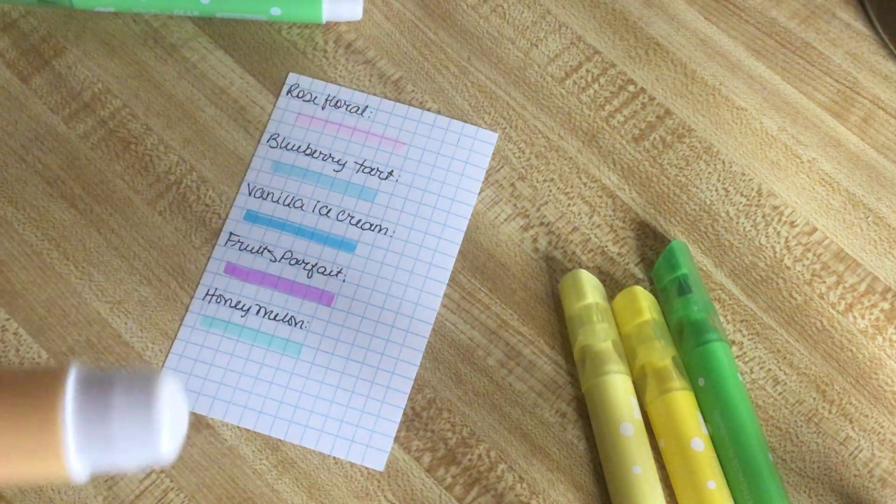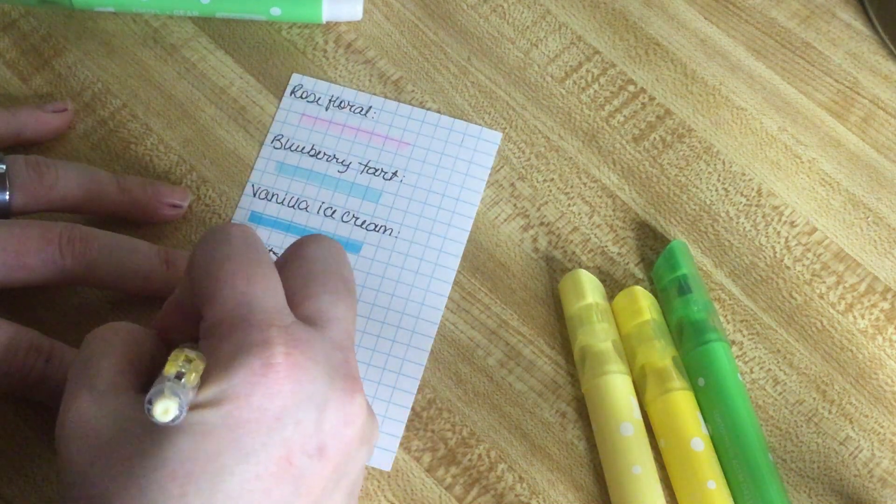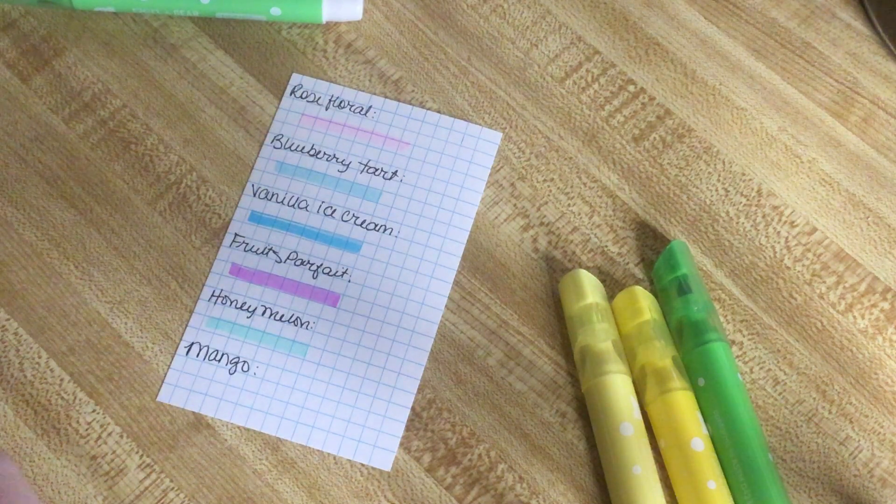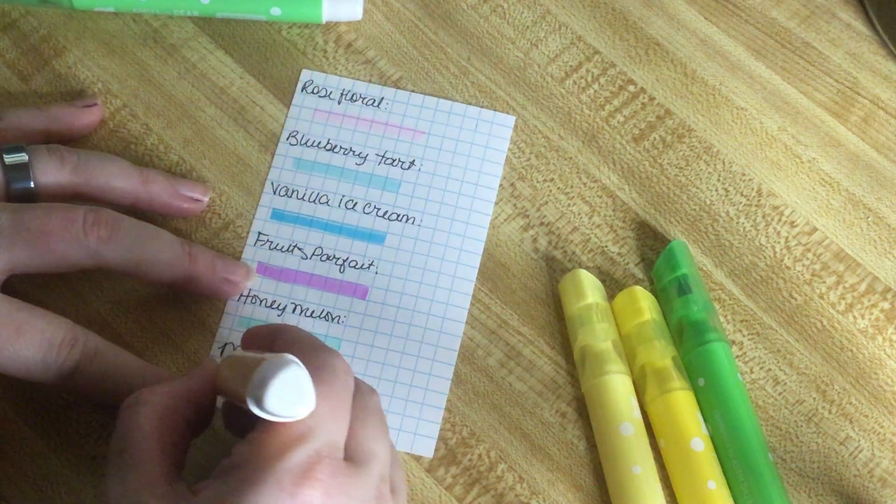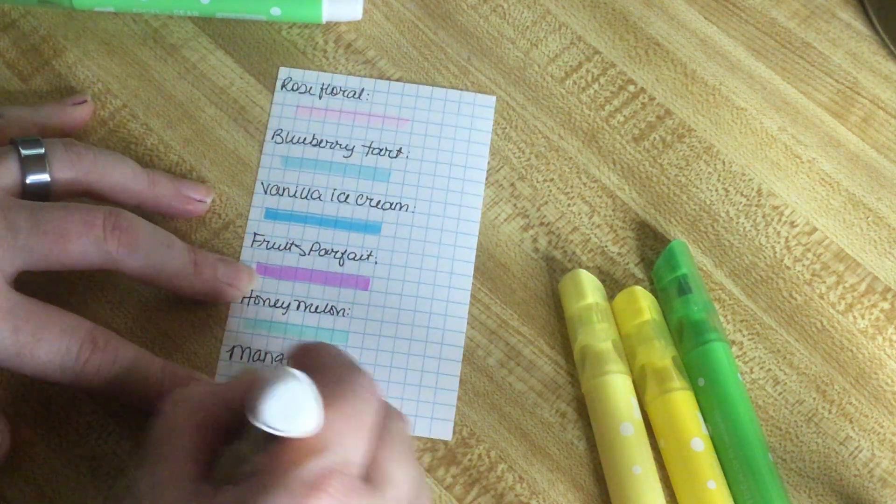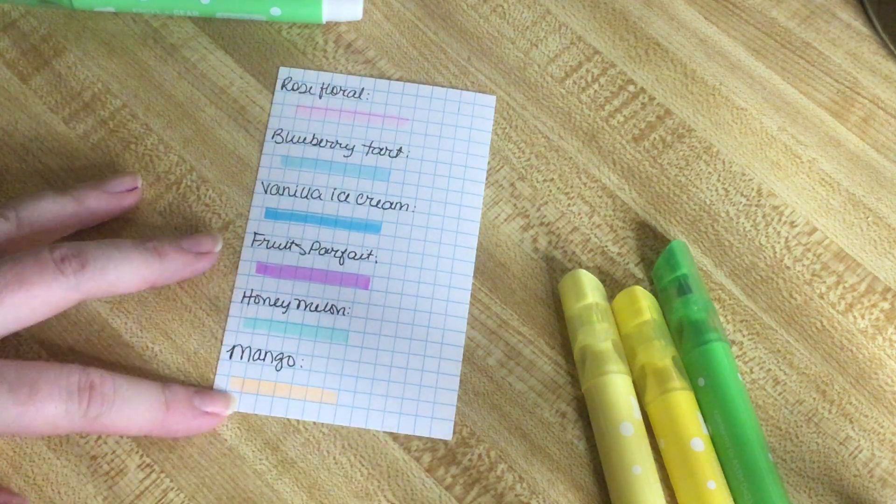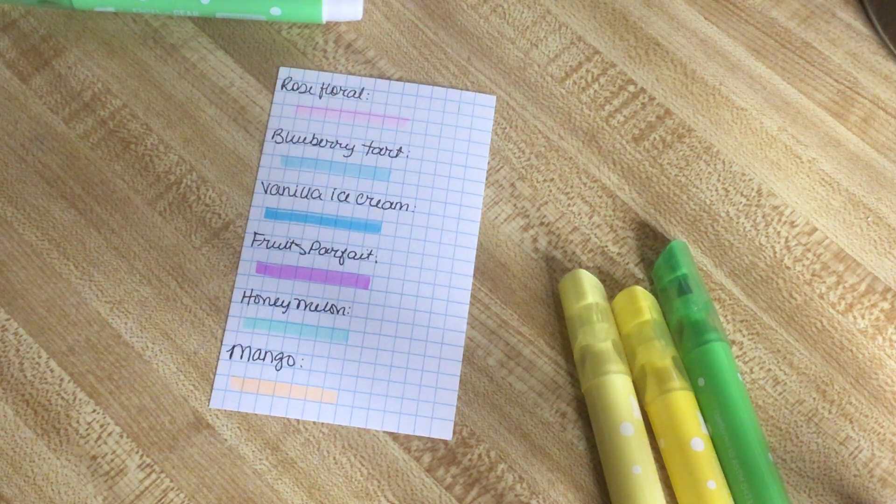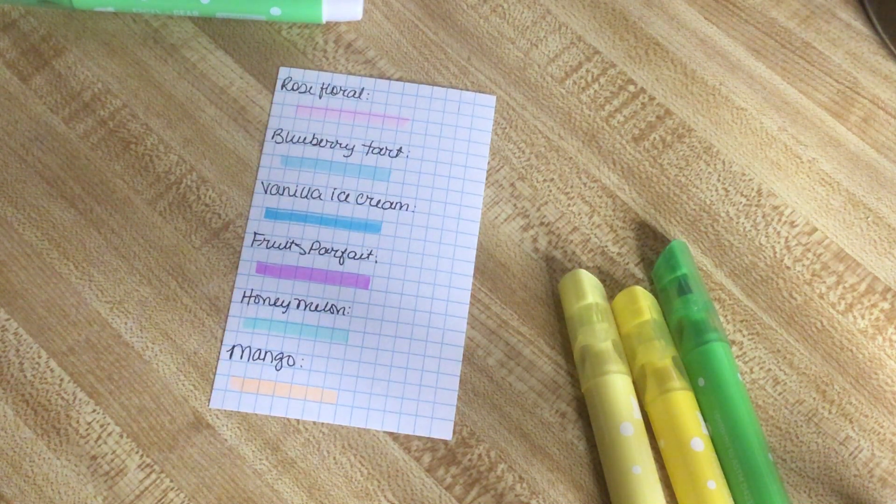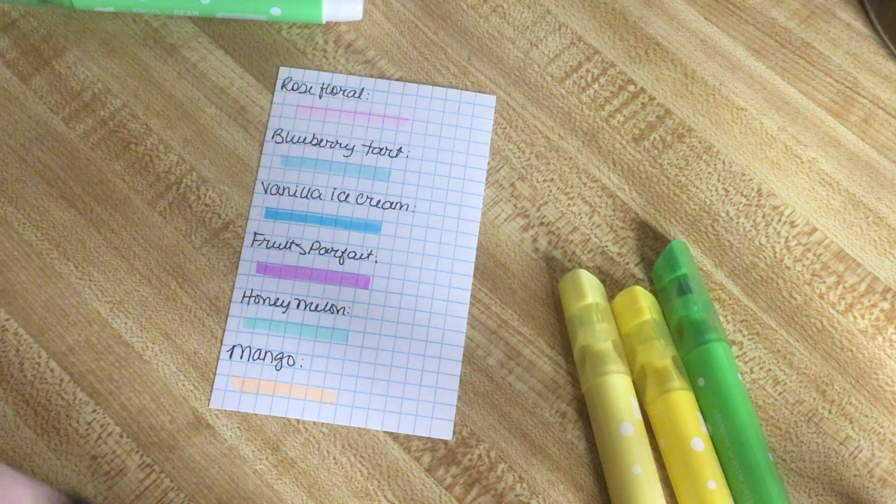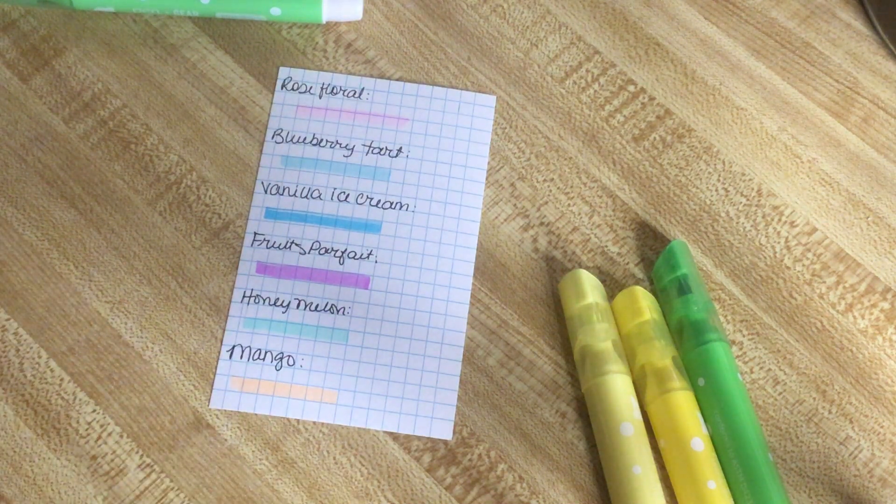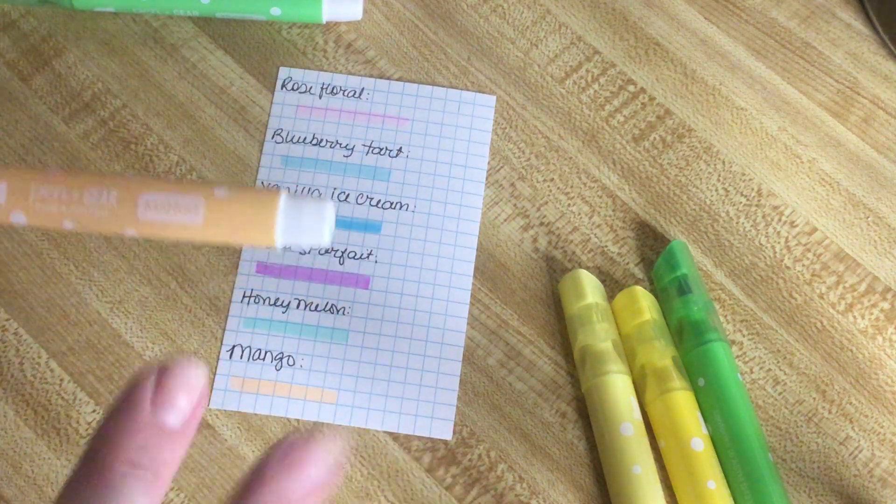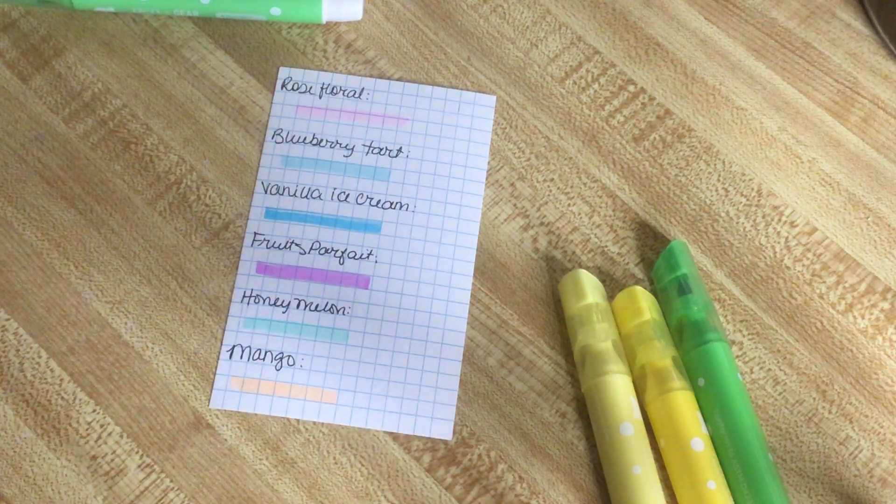The last one is called Mango. It's a very peachy color, which I don't know why they didn't call it peach or use peach scent. Peach scent is out everywhere. This one is, yeah, it's a very peachy color. Look at that, very pretty. I wouldn't say this smells like mango. It smells like fruit but also like vanilla. I could see if they call it mango ice cream or something, but just straight mango, no.